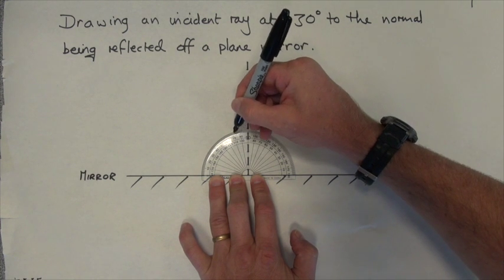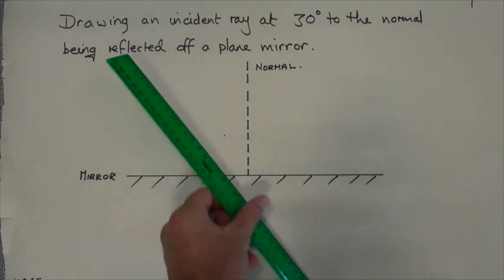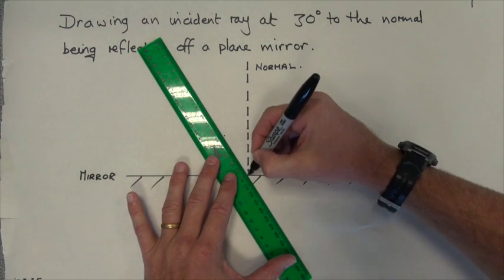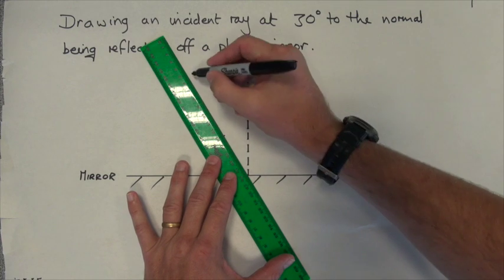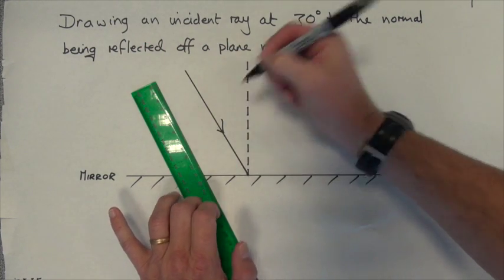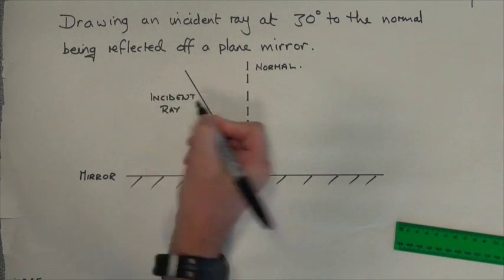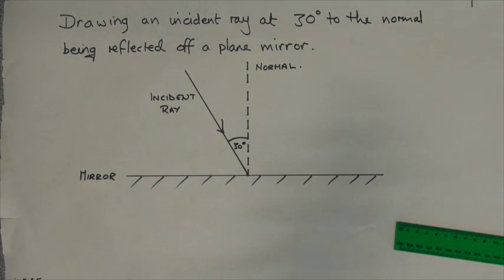Ten, twenty, thirty—put a dot, and then join this dot to the center point where the normal meets the boundary surface. I put an arrow to show the direction the light's coming in and label it. It's an incident ray at 30 degrees to the normal.